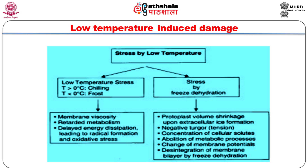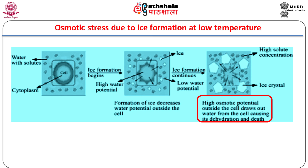Freezing imposes dehydration stress due to reduced water uptake by roots and an inability to close stomata. Ice formation takes place outside cells, causing a decrease in water potential outside cells. This causes water from cells to flow outside, causing dehydration-induced damage. Therefore, the main cause of frost damage to plants in nature is extracellular ice crystal formation that causes secondary water stress to the surrounding cells.